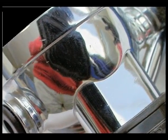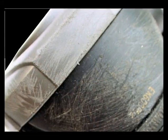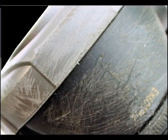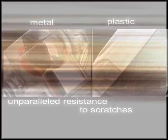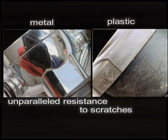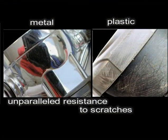Other special characteristics of metal second stages include greater resistance to blows and abrasion — phenomena that quickly degrade and damage plastic regulators.